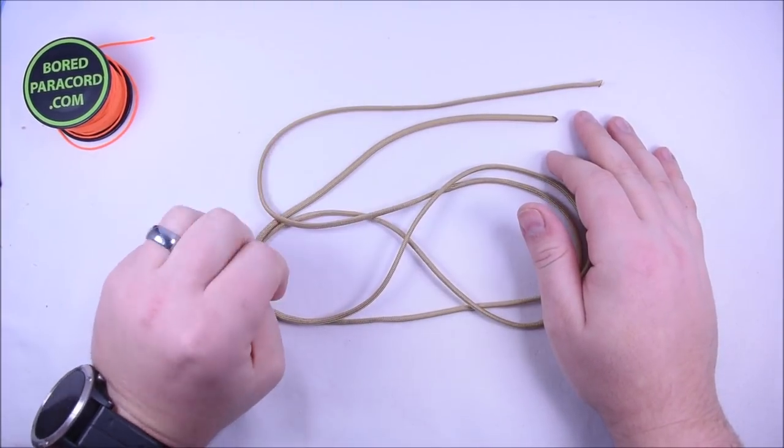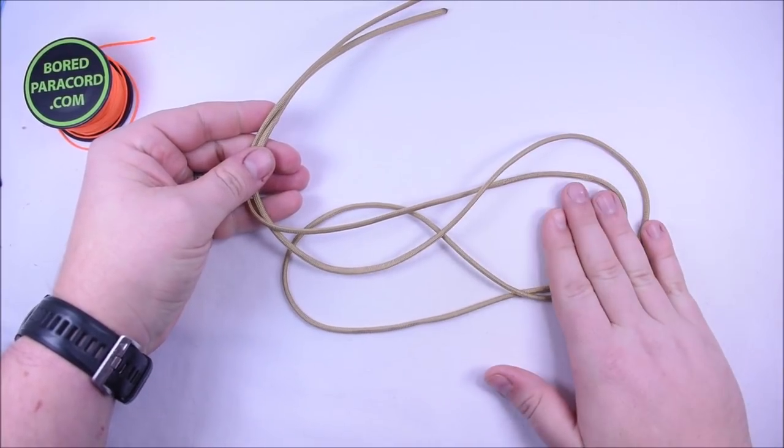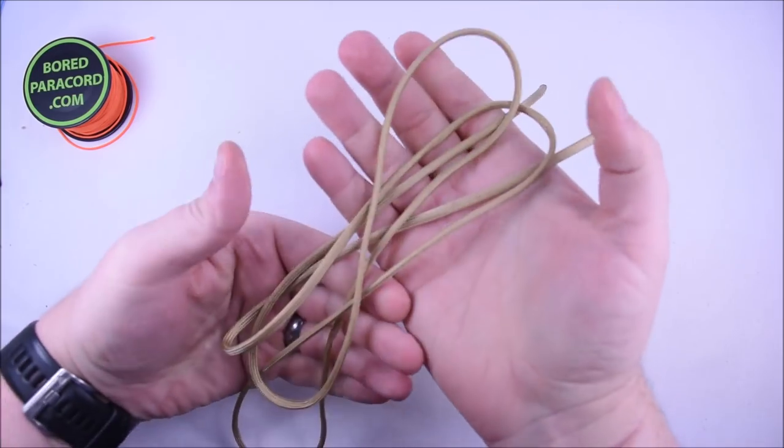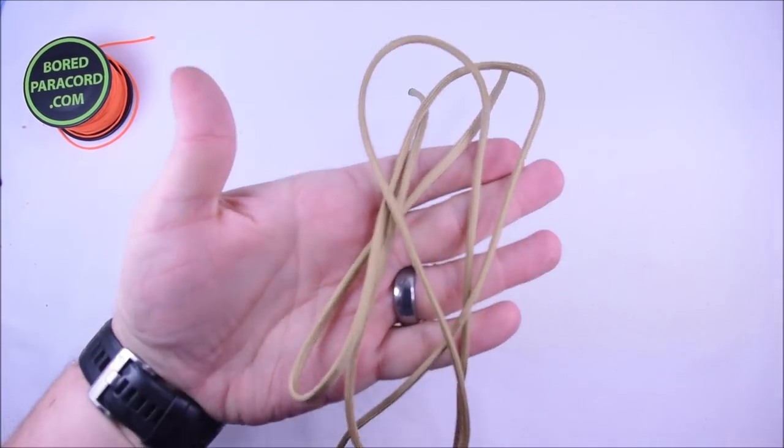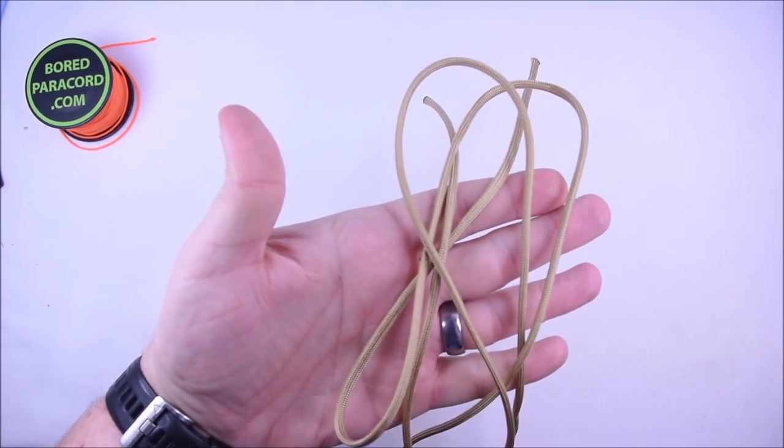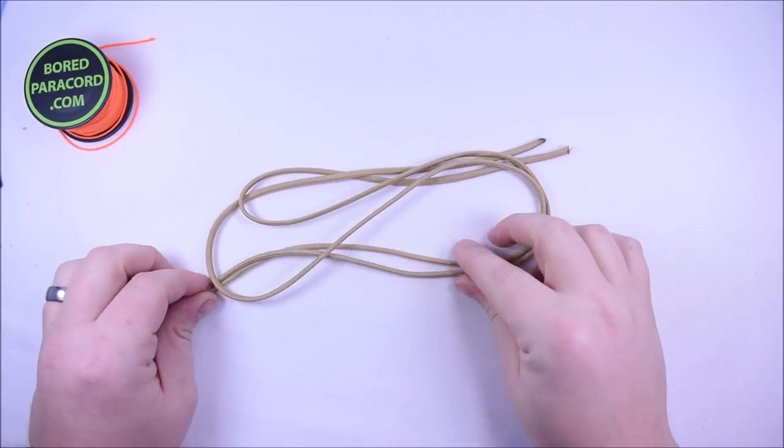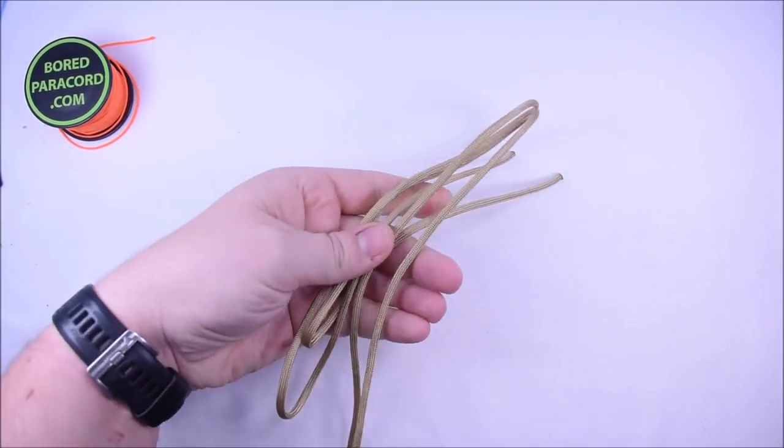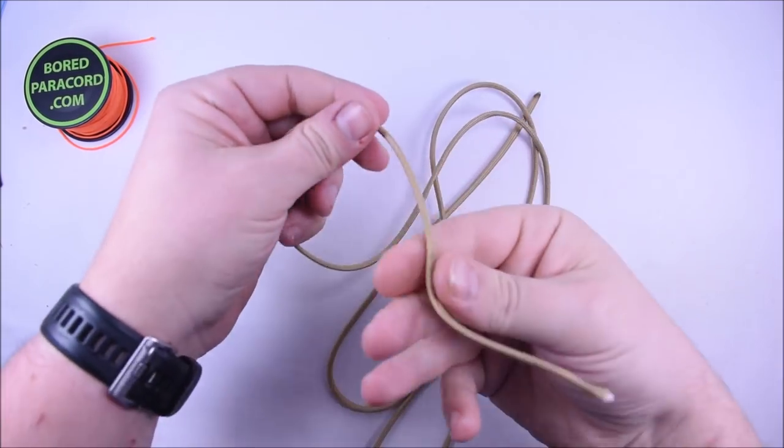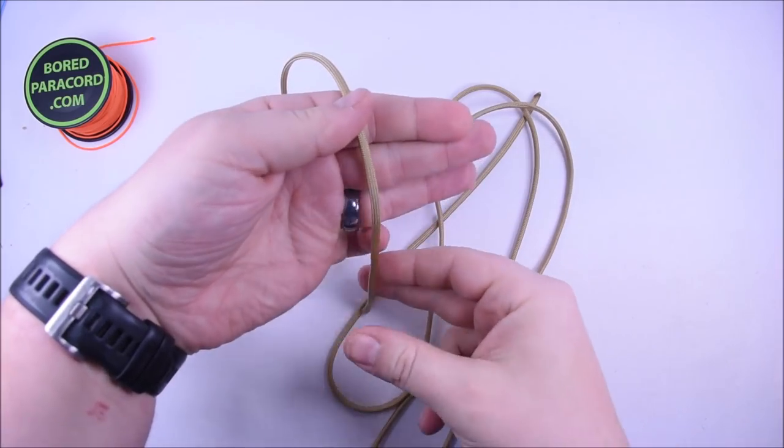It's just going to be a three pass monkey fist. So grab yourself about four and a half feet of paracord. I have about four and a half to five feet. This is gold, it's a nice color, maybe hard to see in this lighting, but it's kind of a darker gold style. So yeah, we have about five feet here.